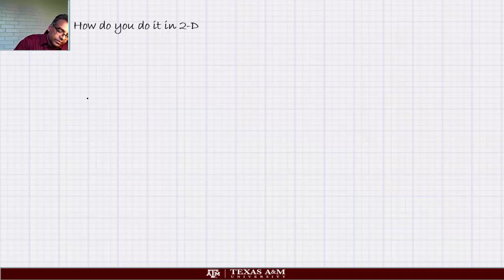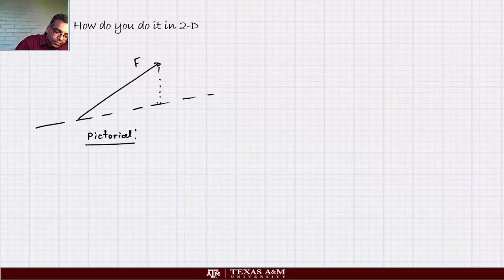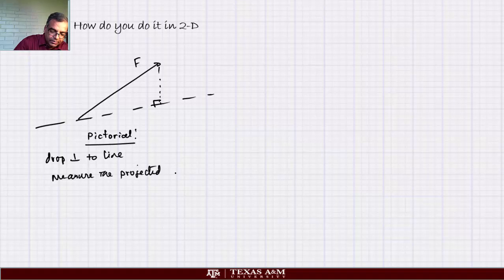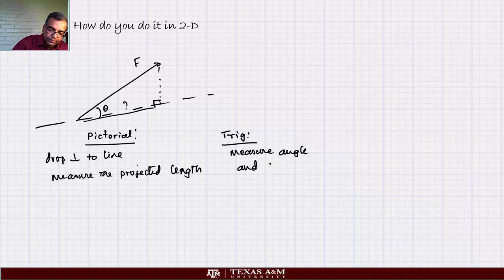Excellent. Let's look at an example in two dimensions. Here is the force F. Here is the line along which you want to find the component. Pictorially, you draw a perpendicular to the line and measure the projected length. Trigonometrically, if the angle is theta, measure the angle and then do F cos theta.